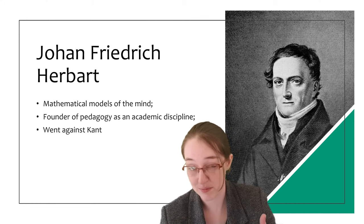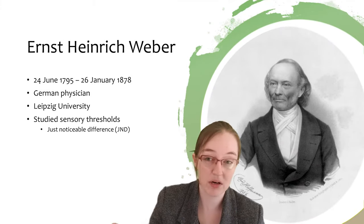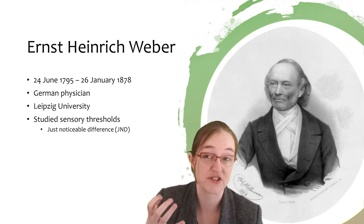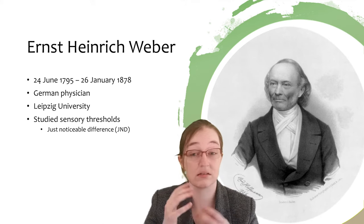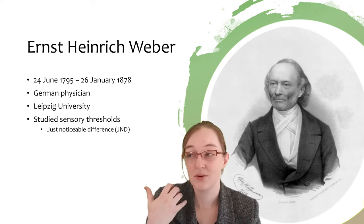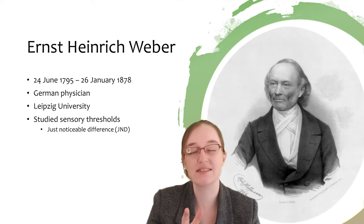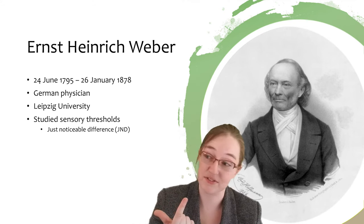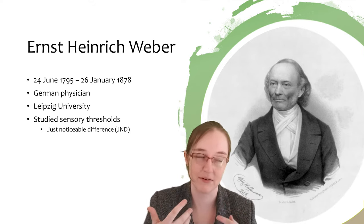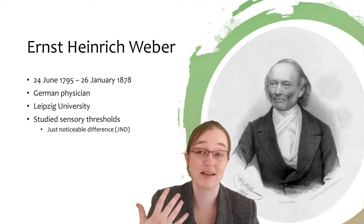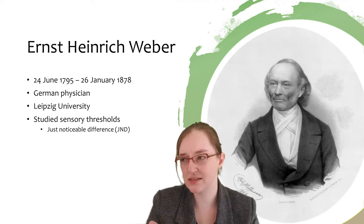Other scientists of this time include Ernst Heinrich Weber, who is the first half of the Weber-Fechner law — the idea that the sensation grows as the logarithm of the stimulus's intensity. Weber was a German physician from Leipzig University in the 19th century. He studied sensory thresholds; a lot of the early work was sensation and perception based, and he was particularly interested in the just noticeable difference.